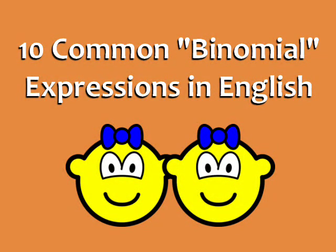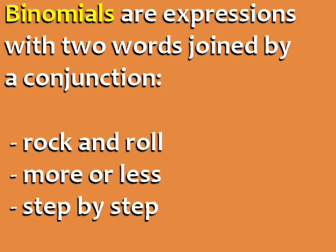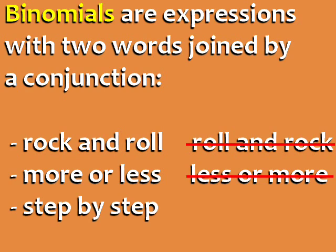10 Common Binomial Expressions in English, from EspressoEnglish.net. Binomials are expressions with two words joined by a conjunction, like rock and roll, more or less, and step by step. The order of the words in the expression is fixed. For example, we can't say roll and rock, or less or more. In this lesson, you'll learn 10 common binomial expressions in English, with definitions and example sentences.